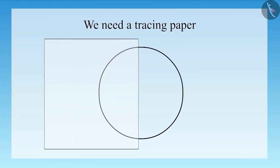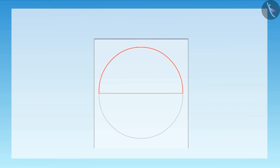How do we do that, uncle? First, take a tracing paper through which we can see across easily. Now make a semicircle, that is half circle, on that paper.